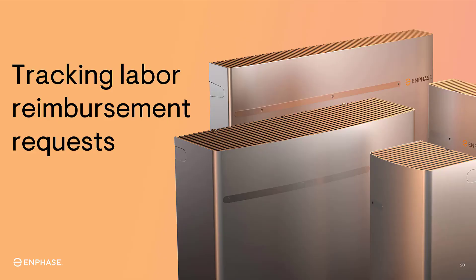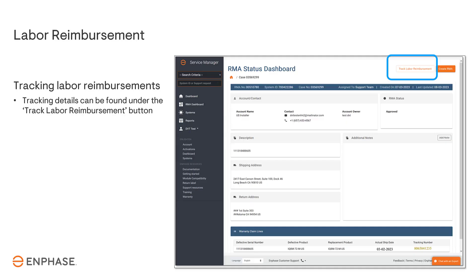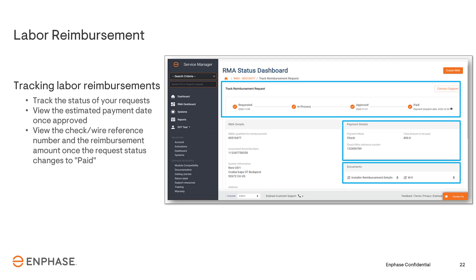Once the reimbursement has been accepted, you can track the status during the process. Clicking on the Track Labor Reimbursement button on the top right corner of the case will take you to the tracking details of the request. On the tracking page, you can track the status of your requests throughout the process, view the estimated payment date once approved, and view the check wire reference number and the reimbursement amount once the request status changes to paid.